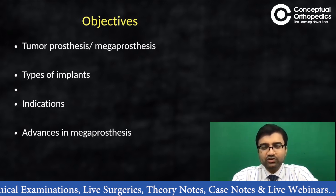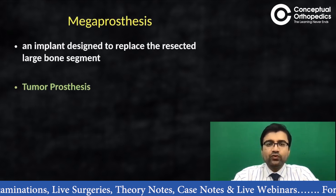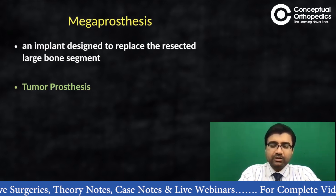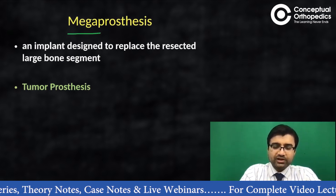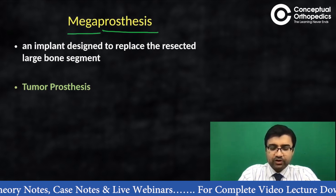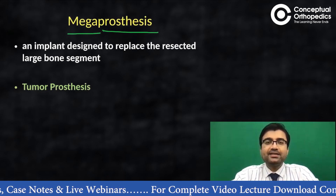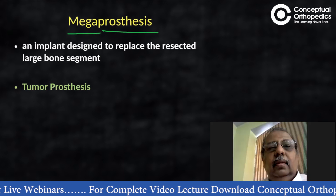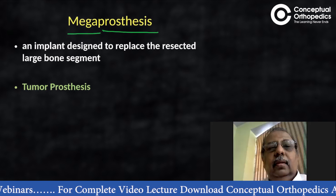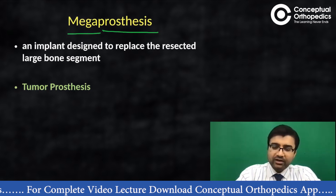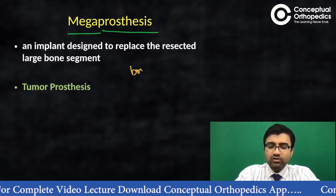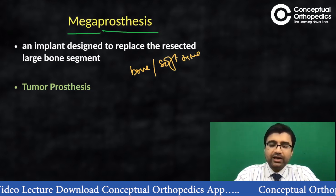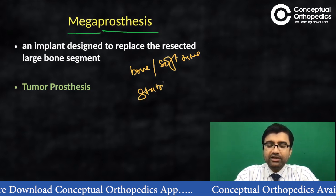When we talk about mega prostheses, the correct terminology is 'mega prostheses' — mega meaning big prostheses. It is an implant designed to replace a resected large bone defect. It is not just about the bone defect; it also replaces surrounding soft tissues and other structures which provide stability.